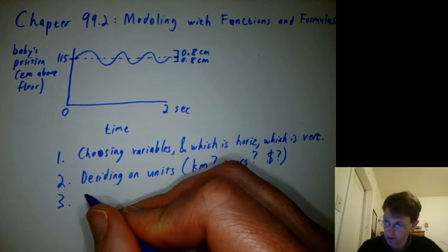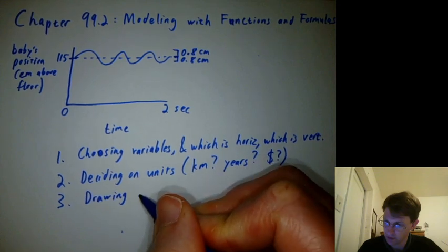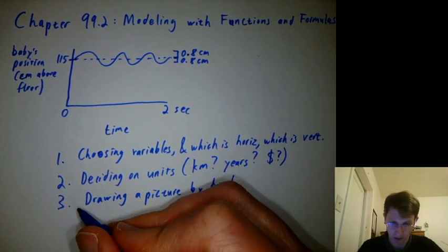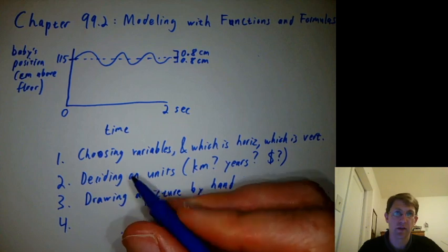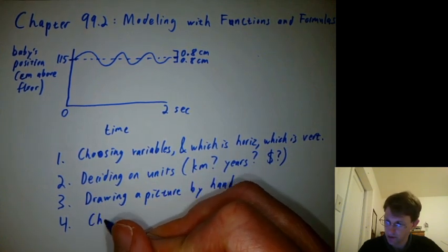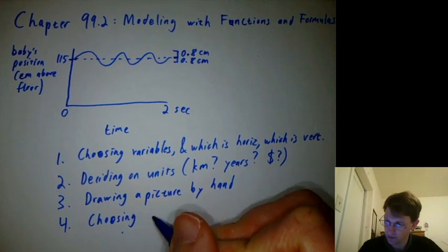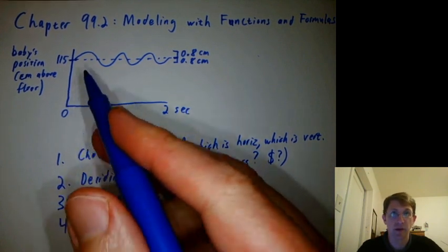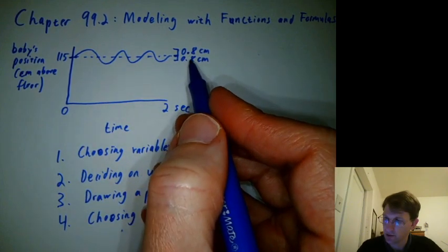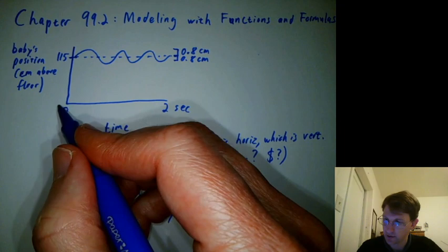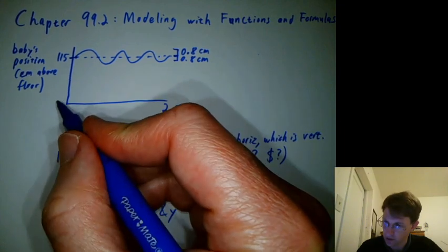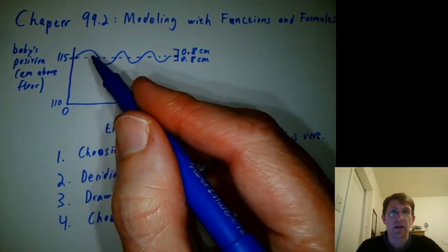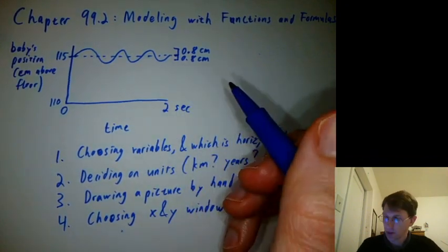Step three is drawing a picture by hand and step four kind of goes along with that. You can mostly do these in either order is choosing your x and y window. I mean like where your axis starts and where it stops, where your axis starts and where it stops. If that's really 0.8 centimeters and this is 115 then this isn't starting at zero. It's starting more at like 110 or something. Because if we really went 0 to 115 then a 0.8 centimeter wiggle up and down would be basically invisible. Just so small.